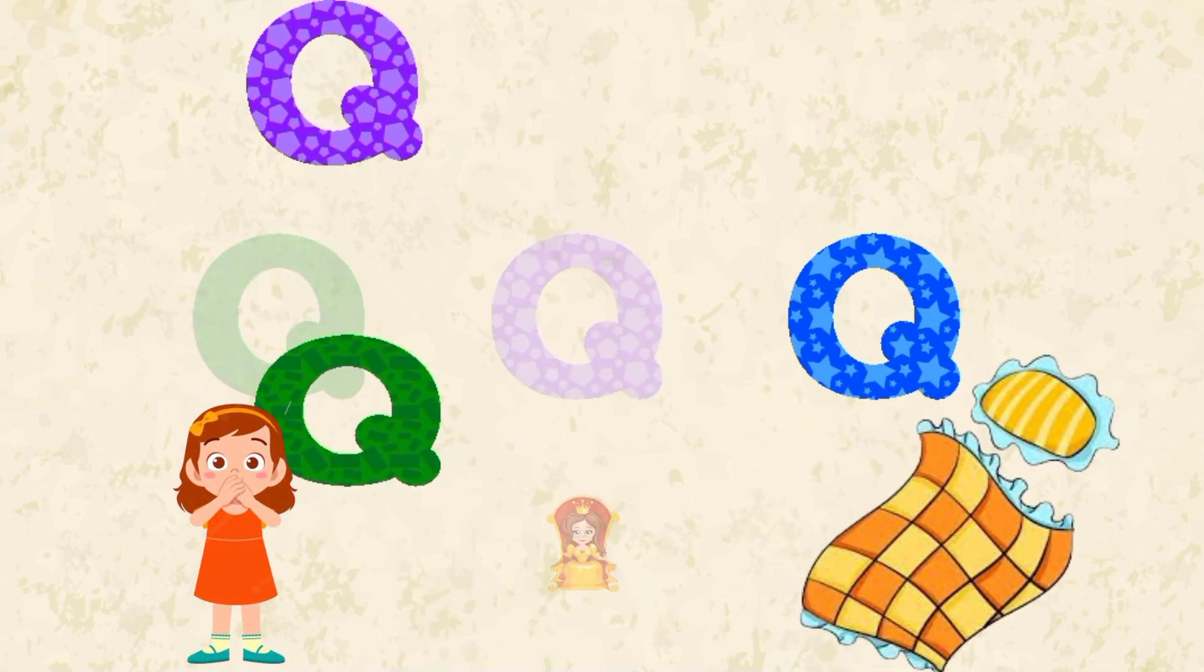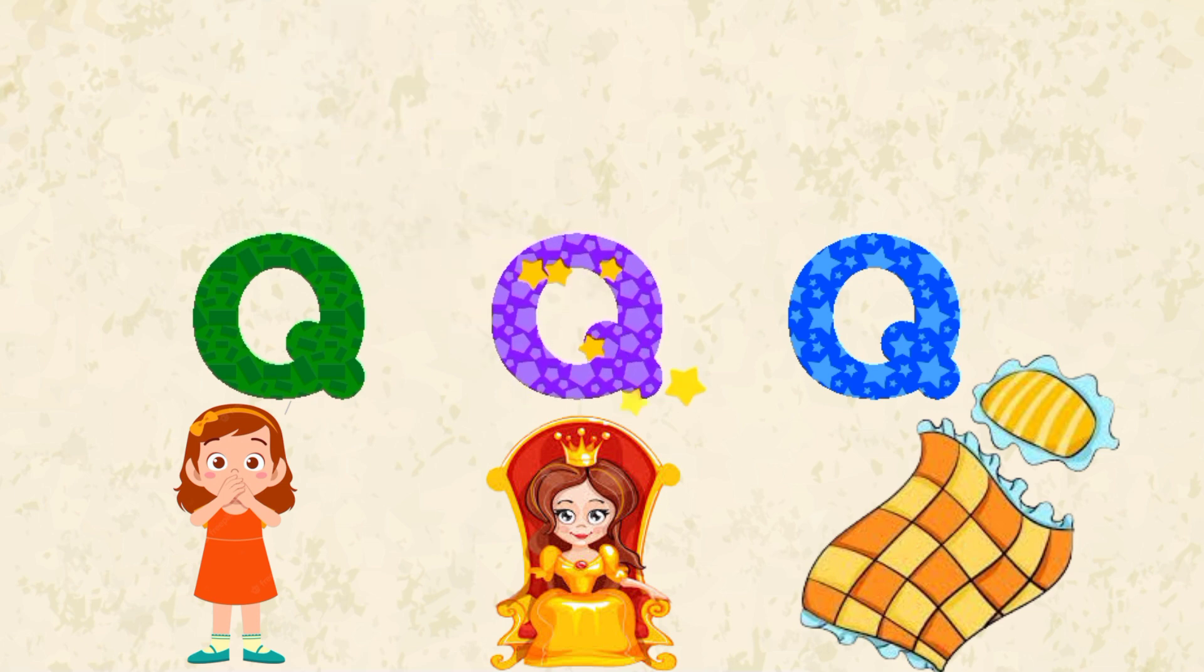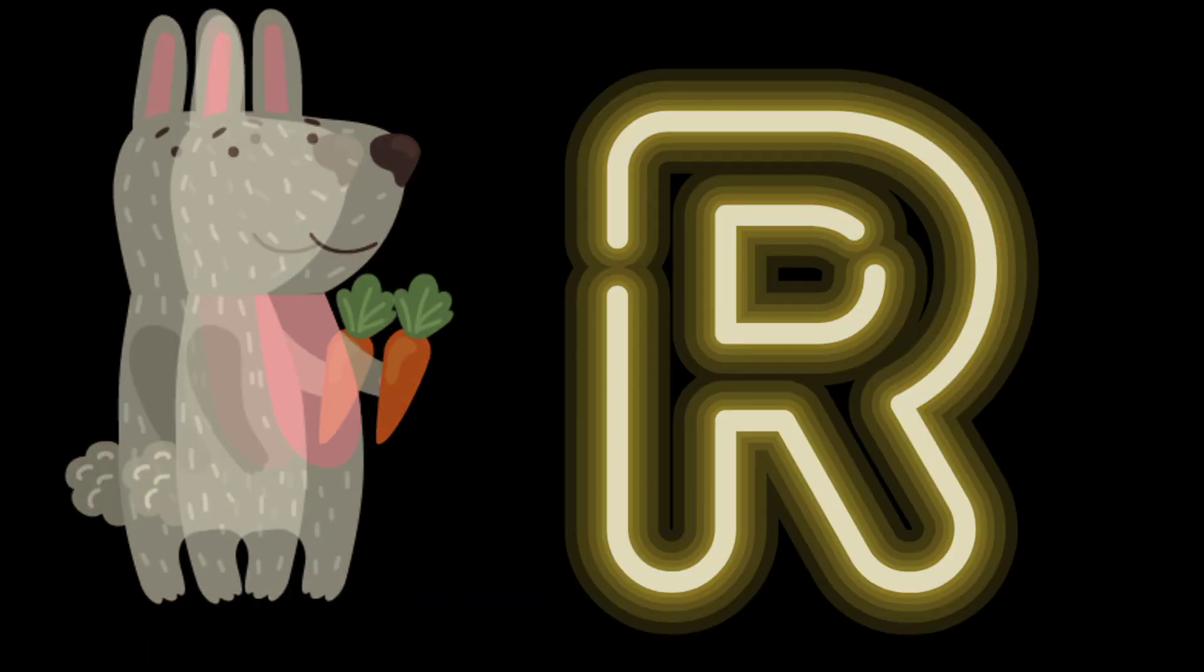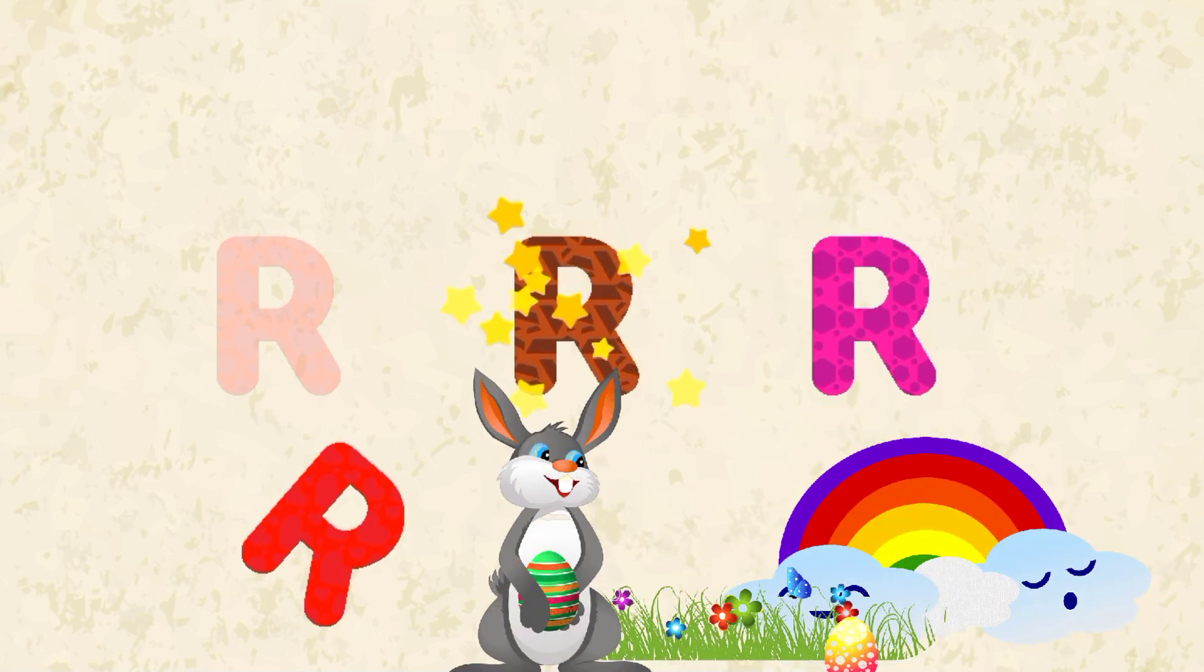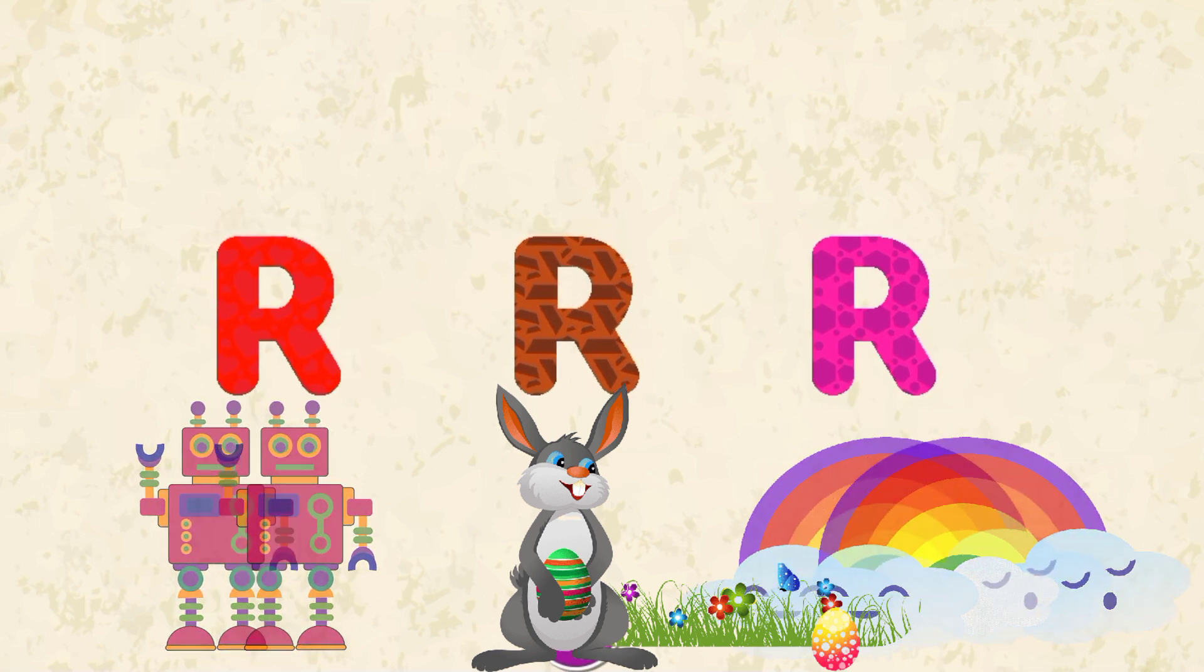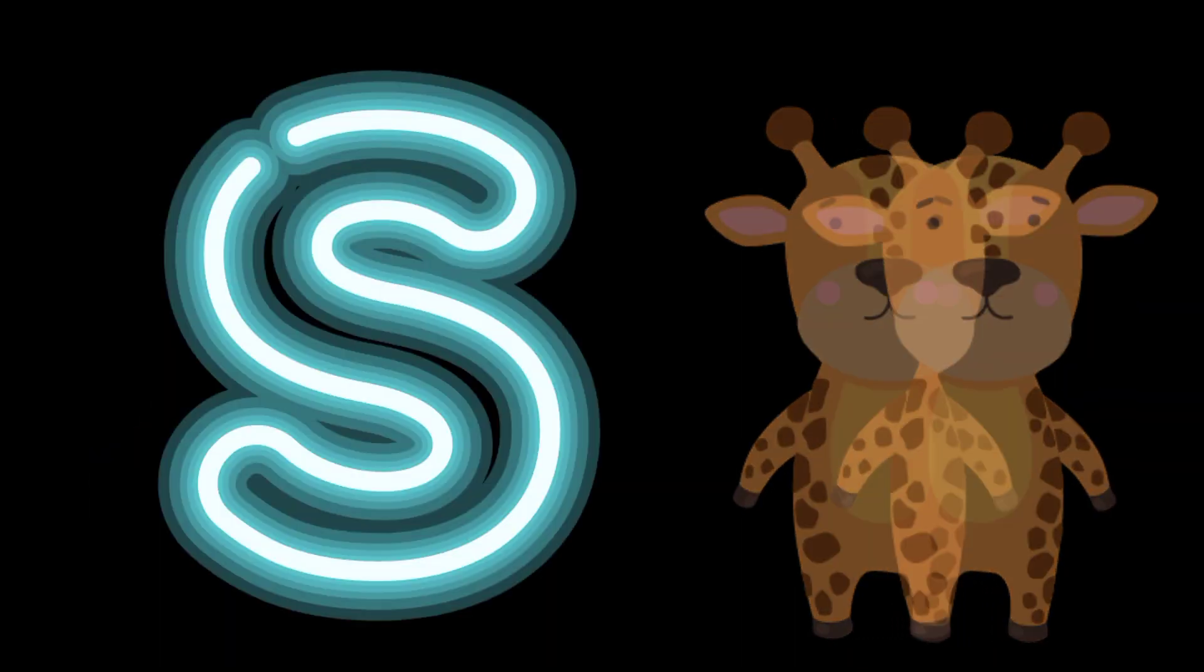Letter Q. Q for Quiet, Q for Queen, and Q for Quilt. Letter R. R for Robot, R for Rabbit, and R for Rainbow.